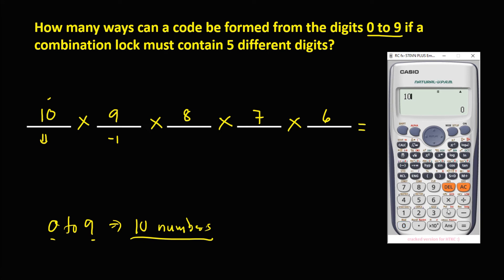So therefore, we have 10 times 9 times 8 times 7 times 6 equals, so the total combination is 30,240.